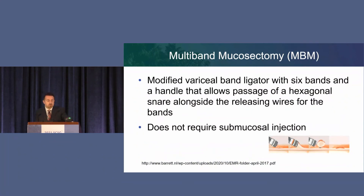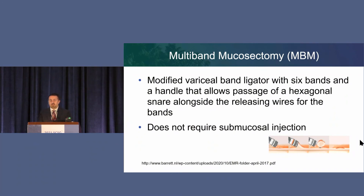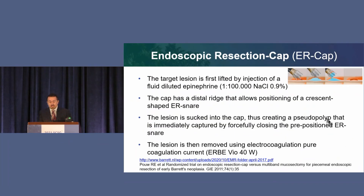The other method, which I think is much more popular, is multiband mucosectomy. Essentially it's the same as esophageal varice banding — no different. You suction in the target lesion and throw a band. After throwing the band, a special snare comes through the same channel while you still have the thread; this device has six bands on it. Then you snare it off. The cap-based technique uses an oblique cap: you inject, suction, the snare goes around, and you take it off.